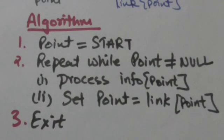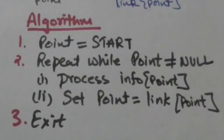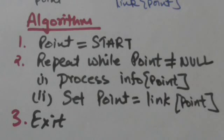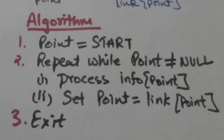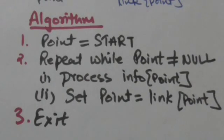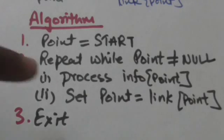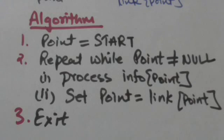After the second step, it is checked whether point is equal to null or not. If pointer variable point is equal to null, it means the last node of linked list L has been processed, so we stop. If point is not equal to null, these two steps will be repeated until pointer variable point becomes equal to null. Thank you.